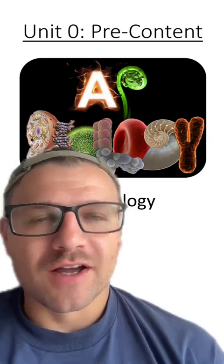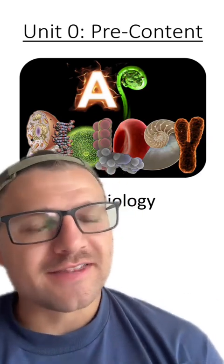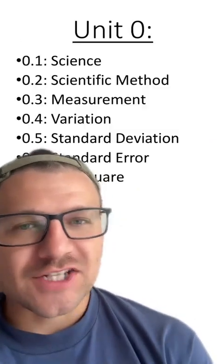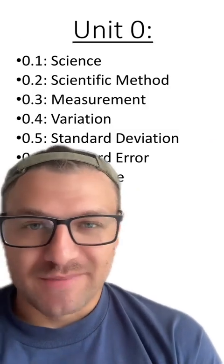This is going to be our second section of unit zero. This is the pre-content that comes before the first unit in AP Biology. In this section, we're going to talk about the scientific method.